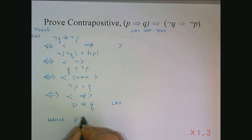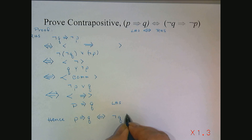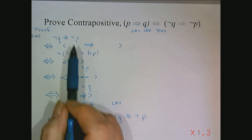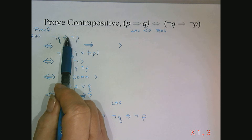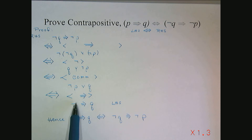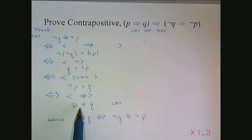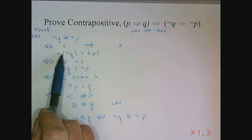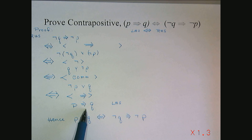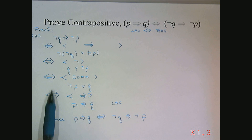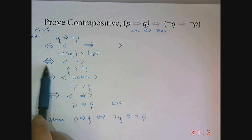Hence, P implying Q is equivalent to not Q implies not P. Notice where transitivity came into play: this is equivalent to this, which is equivalent to this, which is equivalent to this, and so on — so the first predicate is equivalent to the last. Also, the reasoning works in both directions, since equivalency is commutative. I didn't have to prove the implication both ways, because this equivalence-style proof took care of that.